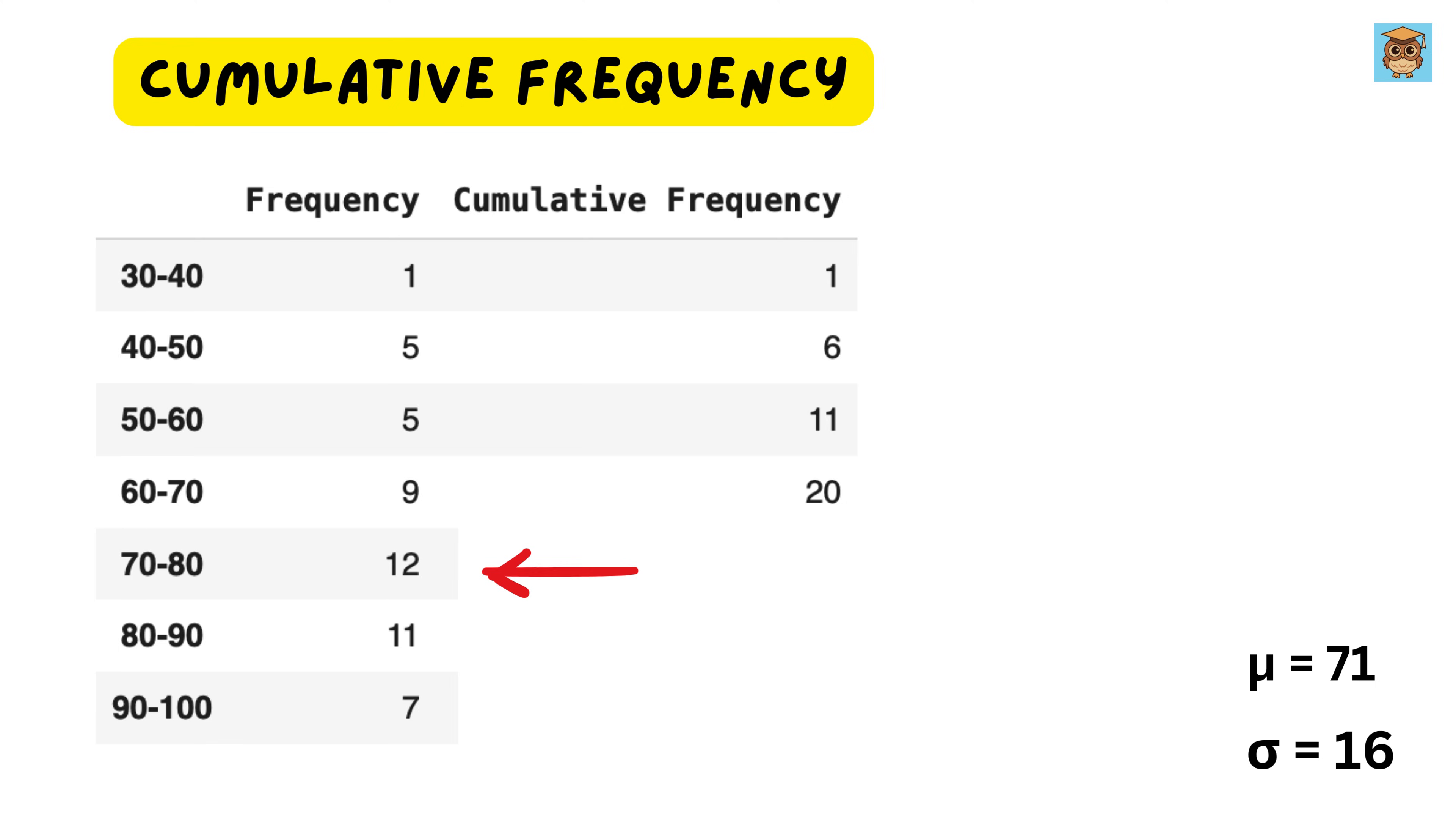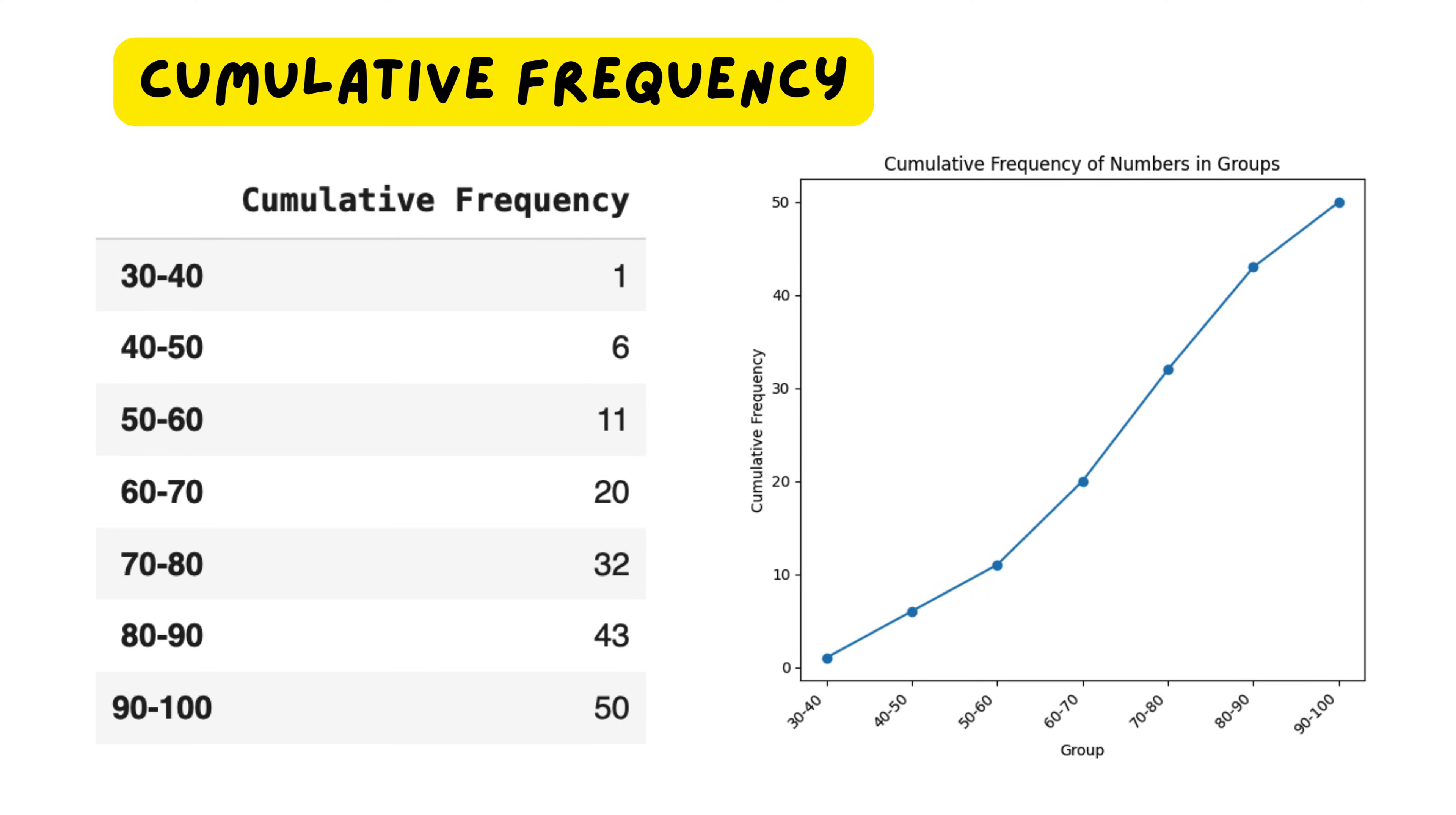Up to 80, we add 12, making it 32 students. Up to 90, we add 11 more, giving us 43 students. Finally, up to 100, we add the last seven, reaching 50 students, which is the total class size. Now, if I ask you how many students scored below 80, you can easily see this table and tell me that 32 students scored below 80, right? If we plot these cumulative totals on a graph, instead of separate bars like in a histogram, we get a smooth increasing curve. This curve shows us the cumulative frequency, how many students have scored below each mark.